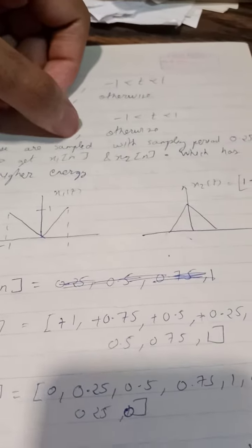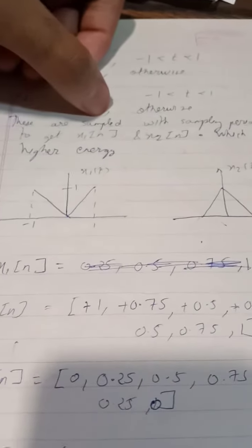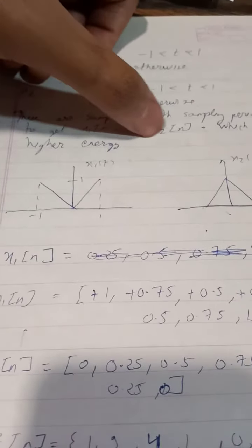These are sampled with sampling period of 0.25 second to get x1n and x2n. So we have to calculate energy of x1n and x2n.